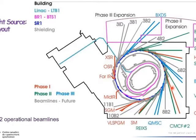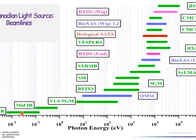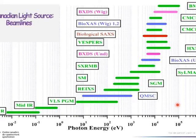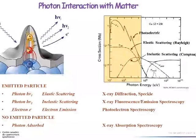Each tangential line from the storage ring is one beamline. We have 22 operational beamlines, each specified to a certain energy range — from far infrared to hard X-rays — and each offering different techniques for certain kinds of characterization.